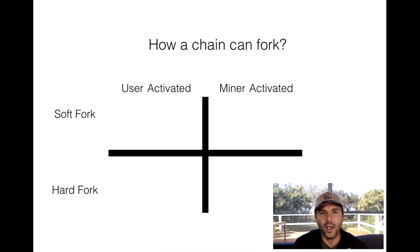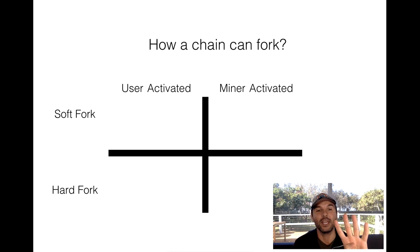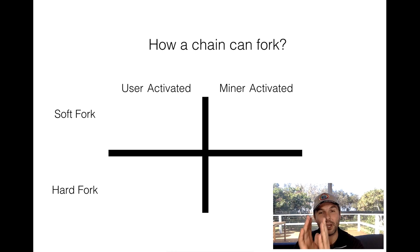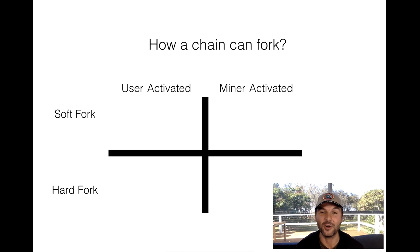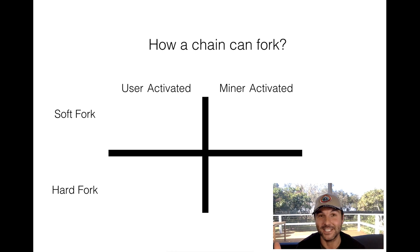A chain can fork in four ways. It can either be user activated or miner activated, and it can be a soft fork or a hard fork. So you can have a user activated soft fork, a user activated hard fork, a miner activated soft fork, or a miner activated hard fork. That's it.